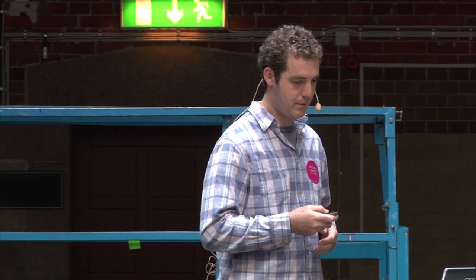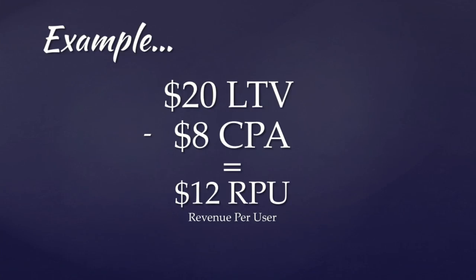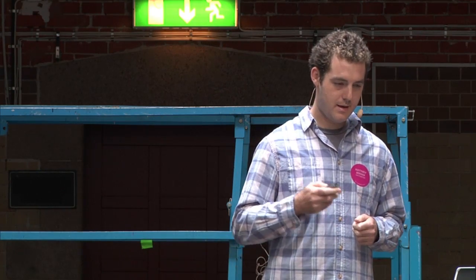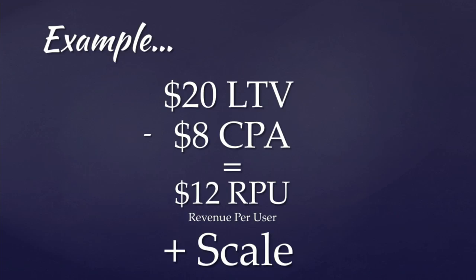Let's look at an example. Let's say we have a 20 kronor LTV and an 8 kronor cost per acquisition. That means for every 8 kronor that we spend, we are actually earning 12 kronor revenue per user. And if we're able to do that at scale, we'll be very happy.